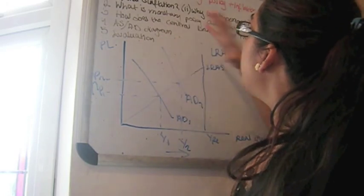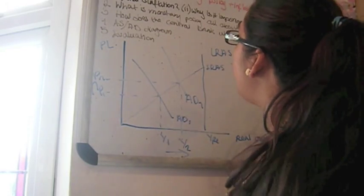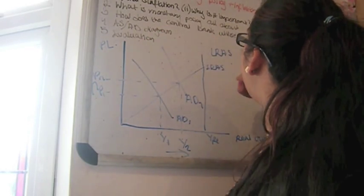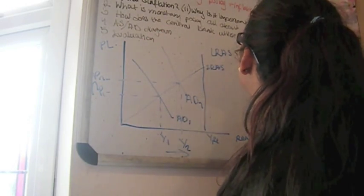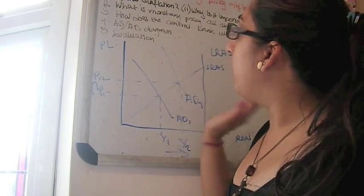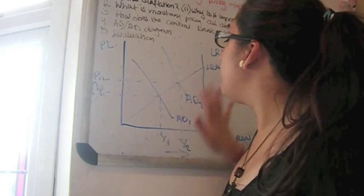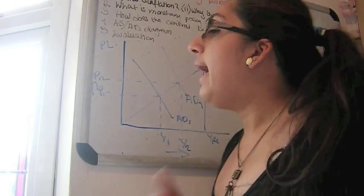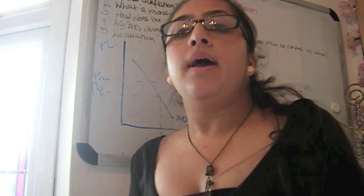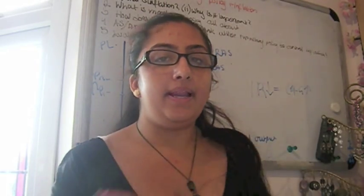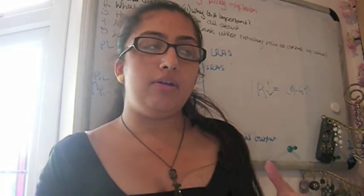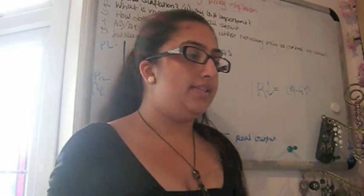In this video we're going to be looking at five sections. The first section we're going to explore is what is inflation and why is it important. The second is what is monetary policy. And the third is how does the central bank utilize monetary policy to control inflation. And the fourth is the aggregate demand and aggregate supply diagram. And fifth, we're going to evaluate the use of monetary policy in order to manipulate inflation. It will be quite a long video, but let's see how it goes.